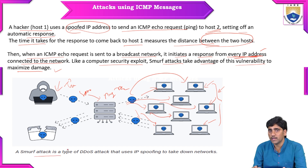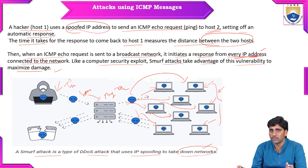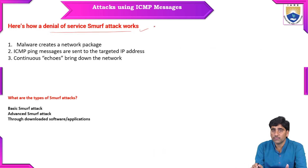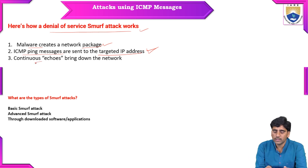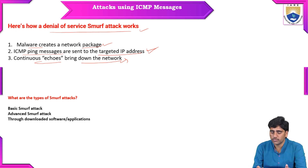A smurf attack is a type of DDoS attack that uses IP spoofing to take down networks — making the network unreliable, inaccessible, or services unreachable. First, malware creates a network packet; then ICMP ping messages are sent to target IP addresses. Sending continuous echoes brings down the network.